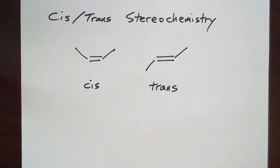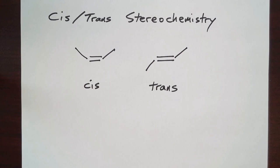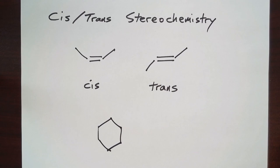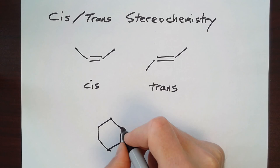Cycloalkanes also exhibit this cis-trans-stereochemistry because two substituents can either be on the same side of the ring or on opposite sides of the ring. The simplest way to illustrate this is to draw the ring in the plane of the paper and illustrate the substituents as either dashes or wedges depending on if they're coming toward you or away from you.